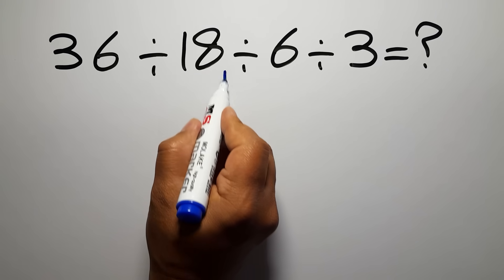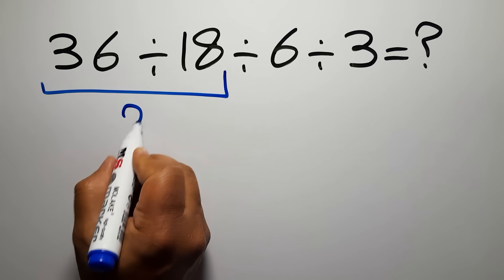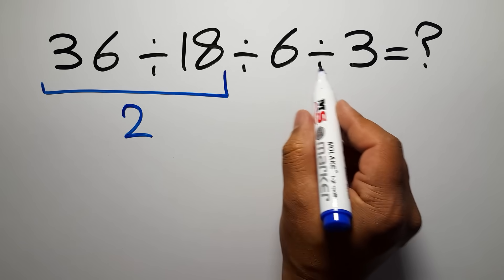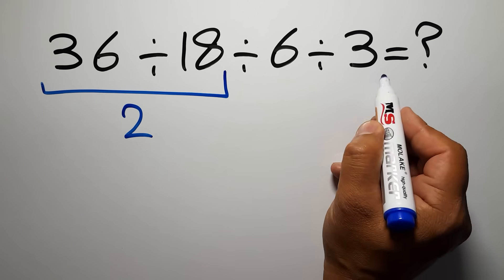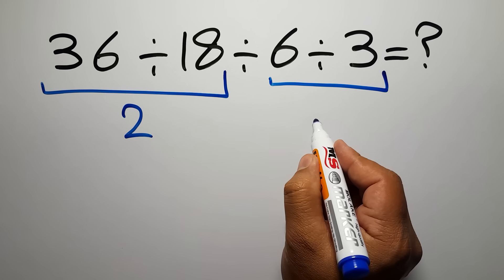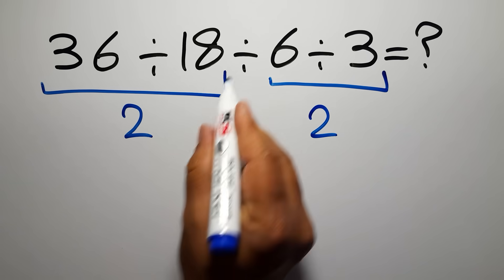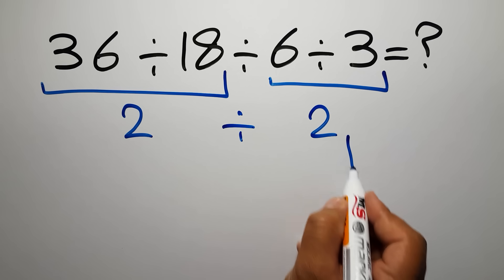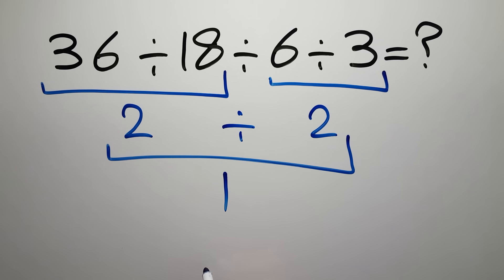36 divided by 18 gives us 2, and here we have 6 divided by 3 which gives us 2. So 2 divided by 2 equals 1. But this answer is not correct because according to the order of operations,